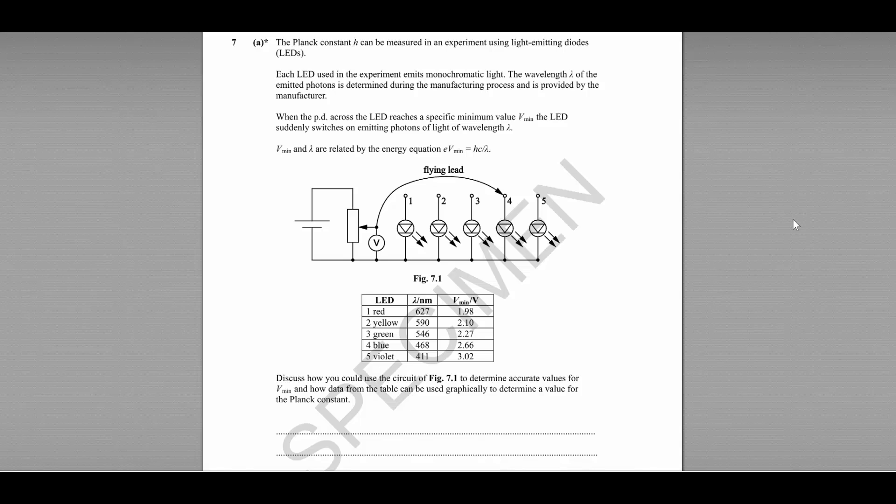Question number seven is another extended writing question regarding a practical. This one is a practical to find the Planck constant using light emitting diodes. This is one of the practicals you should be familiar with from the PAGs. So each of these LEDs emits monochromatic light. The wavelength of the emitted photons is determined during the manufacturing process and is provided, so we know the wavelength of each of these.